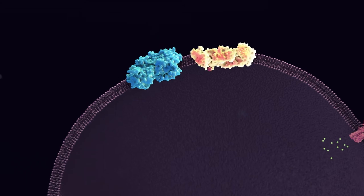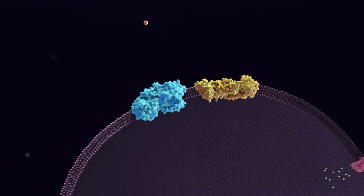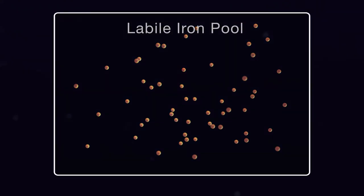The released iron is reduced by STEEP, six transmembrane epithelial antigen of prostate, and transported across the endosomal membrane by DMT1. It then enters the intracellular labile iron pool.